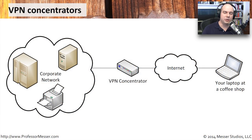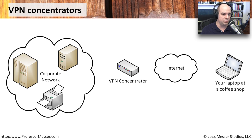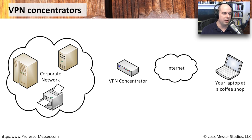VPN concentrators are becoming increasingly common. You can buy them now for your home office and use VPN software to connect back through an encrypted tunnel to your home office, where you can then print on your local printer even though you're somewhere else. The way these concentrators work is: you may be out on the Internet, at a coffee shop or a hotspot somewhere, and you want to communicate to your corporate or home network without the people on the Internet seeing what's going on.